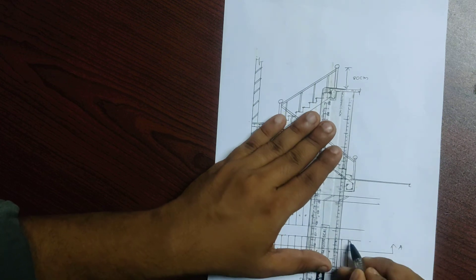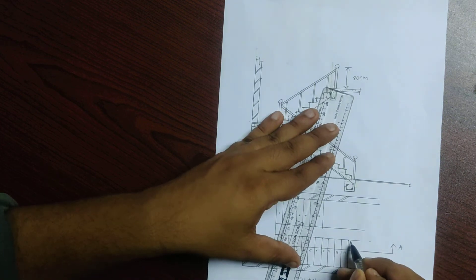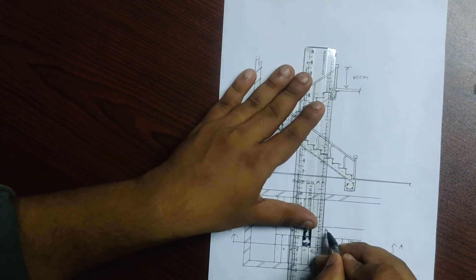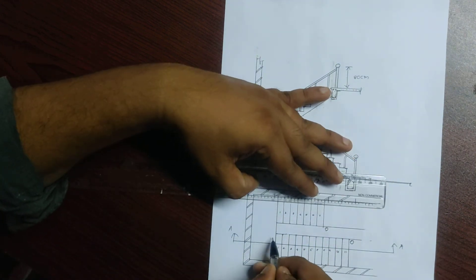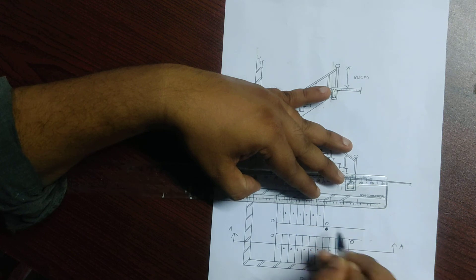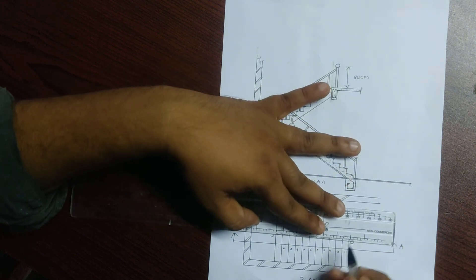As you can see here, starting here, the ending end is like this. From this, we will use the handrail plan.